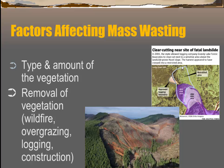It was believed — back in that natural disaster video, the Edpuzzle video discussing the major mass wasting event in Washington State — that one of the triggering factors was an unapproved logging area on top of a slope that was already unstable.